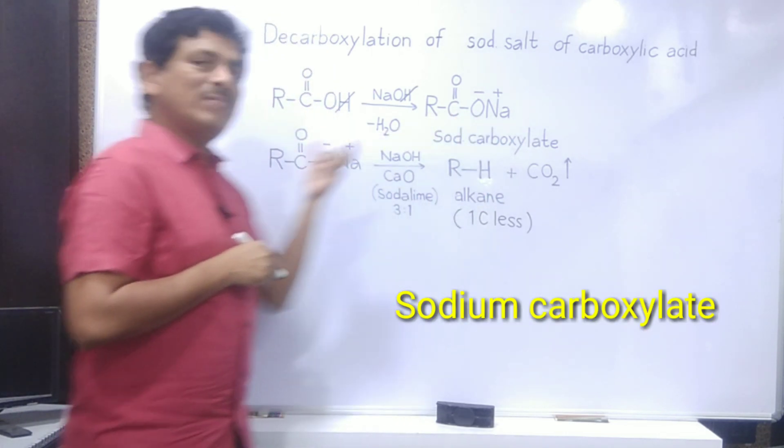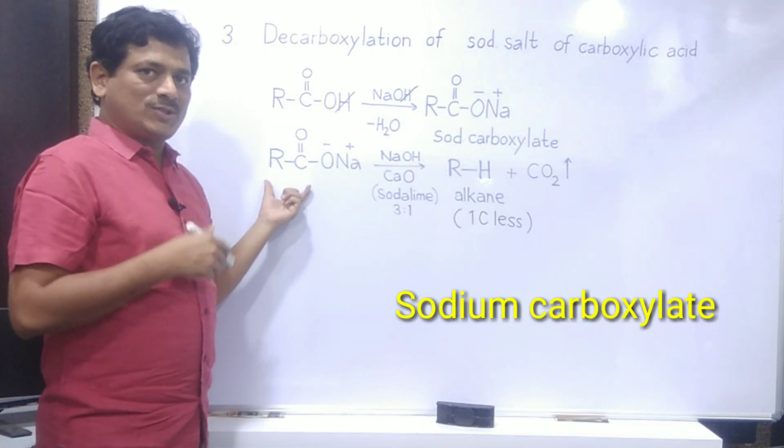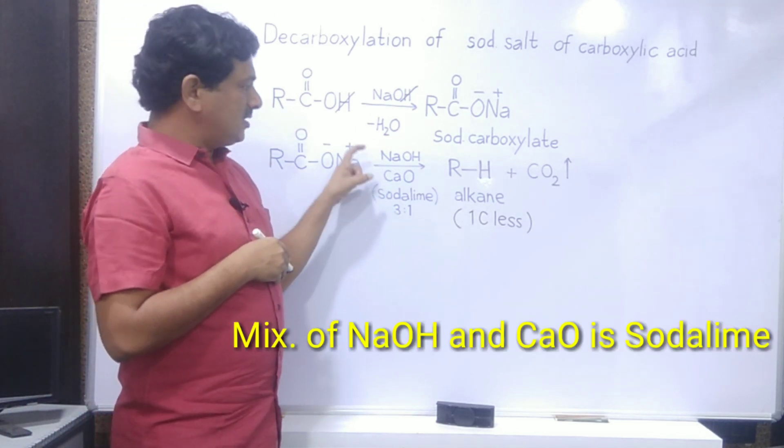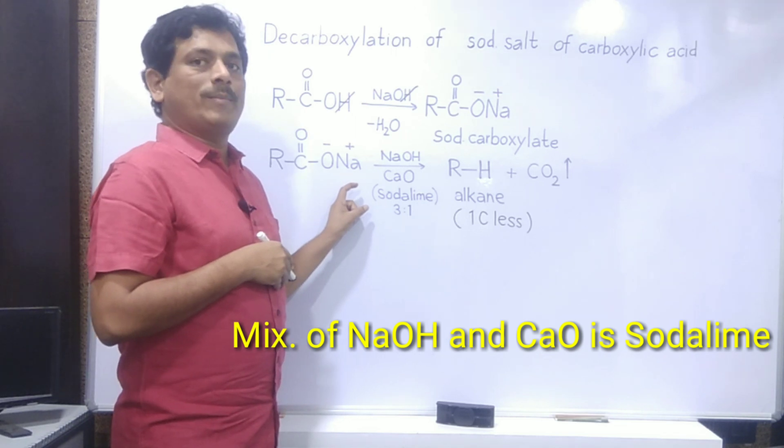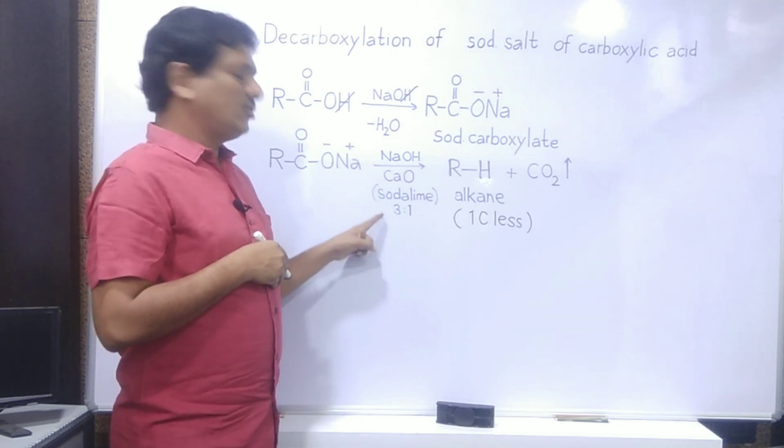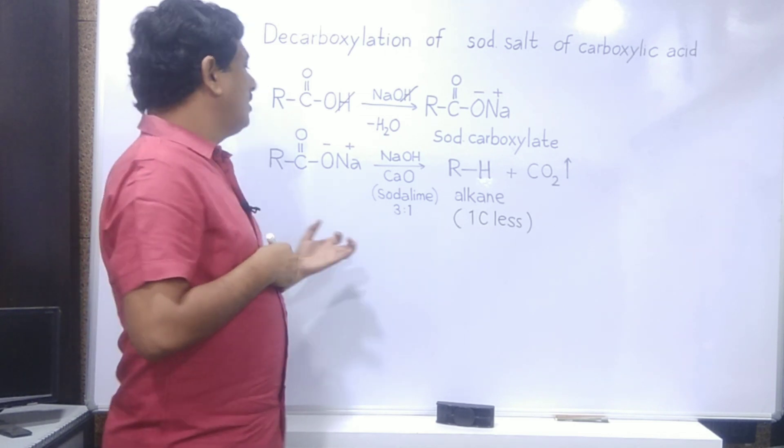Now this sodium carboxylate I am taking in the next step, where I am treating it with a mixture of NaOH and CaO. This mixture is called soda lime. The content here, NaOH and CaO, are in 3 to 1 ratio.